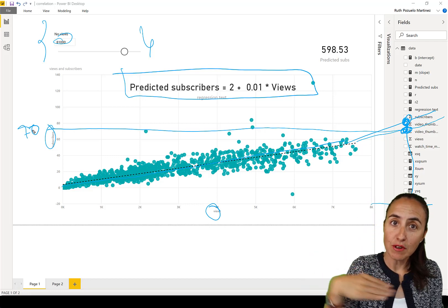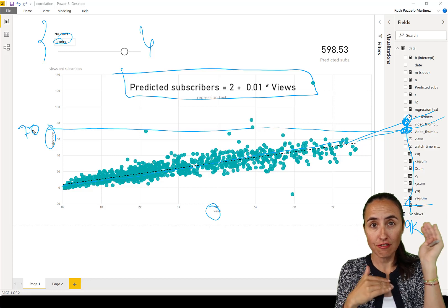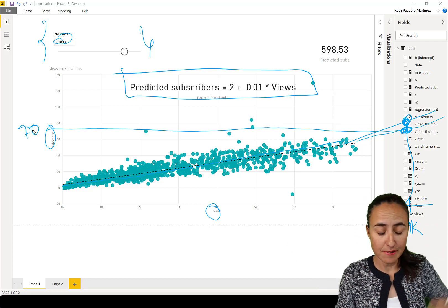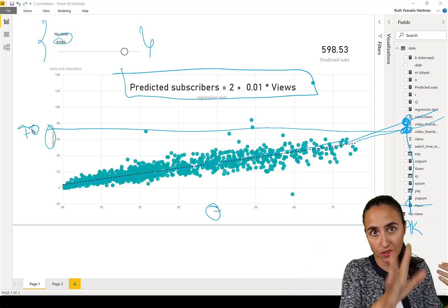Based on number of views, I can predict the number of subscribers. That is a linear regression if it follows a line. You calculate the line. I'll show you how to do that on the previous video and you're good to go.